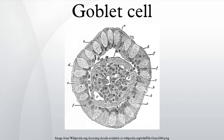The majority of the cell's cytoplasm is occupied by mucinogen granules, except at the bottom, where rough endoplasmic reticulum, mitochondria, the nucleus, and other organelles are concentrated. The apical plasma membrane projects microvilli to increase surface area for secretion.